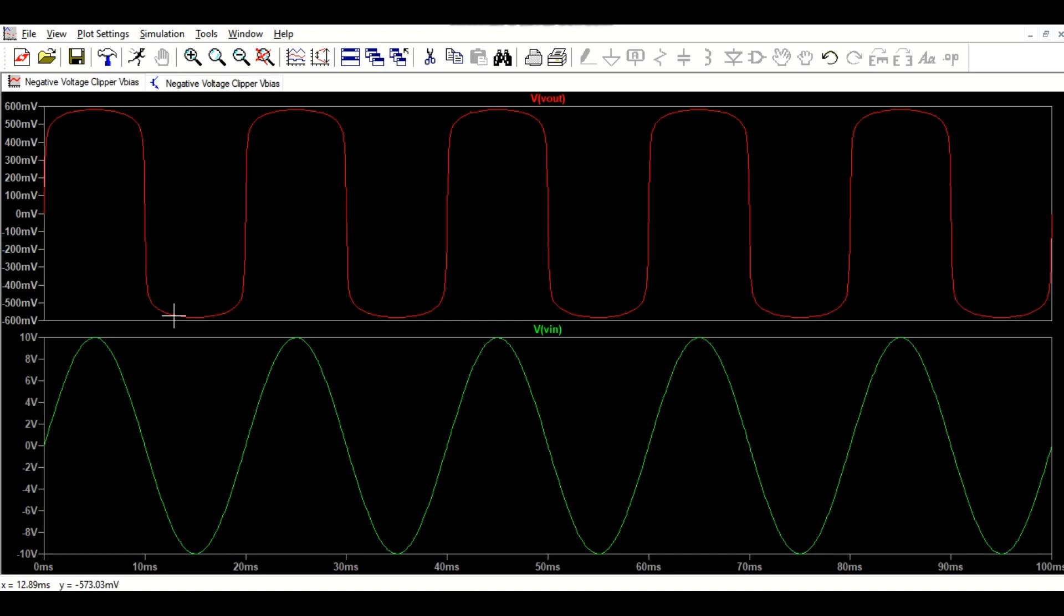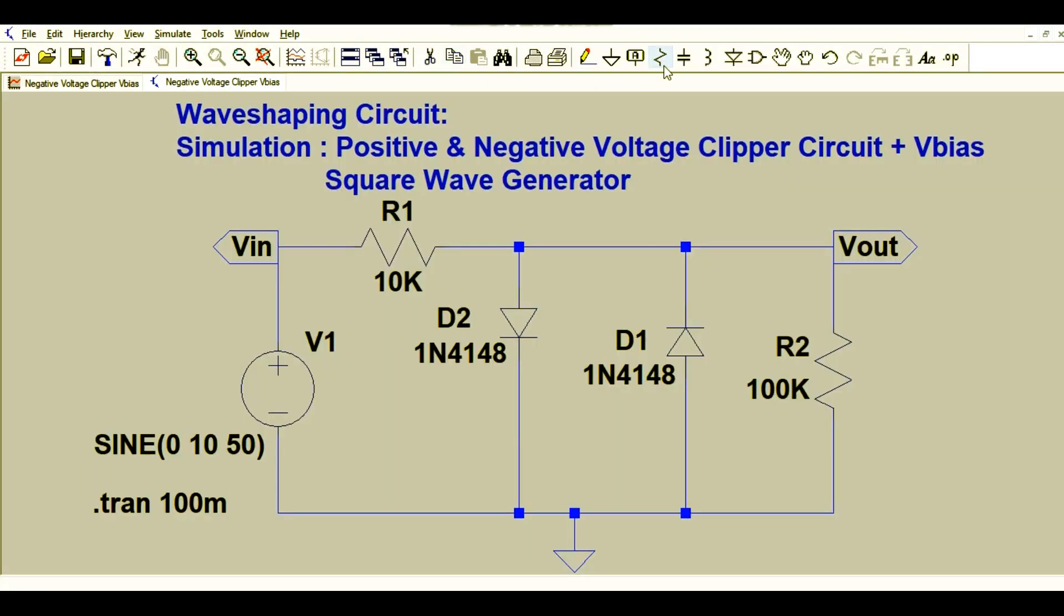You can see here you are applying 10 volts peak at input and you are getting a square wave at output with 600 millivolt amplitude level. Let's play around with this circuit.